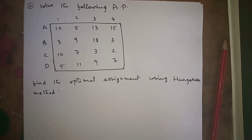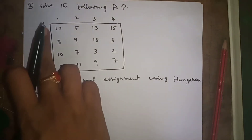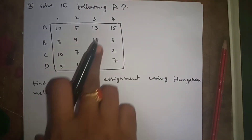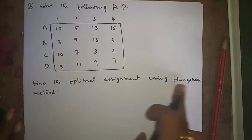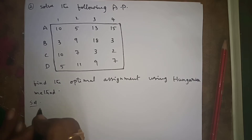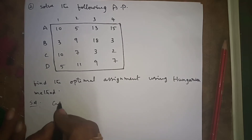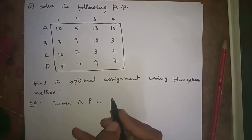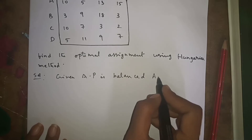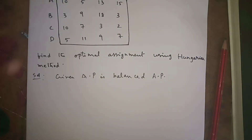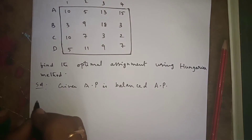Hello everyone, today I am going to explain one more problem in the assignment problem. The given problem has four rows and four columns. This is a balanced assignment problem. Given that the AP is balanced, we can start the problem directly. Step one is row reductions.